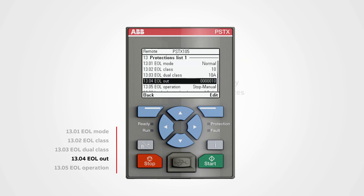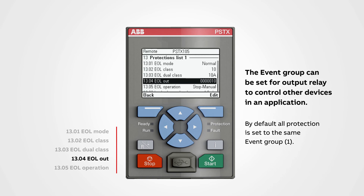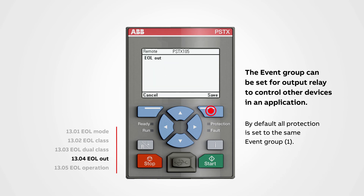EOL output: the event group can be set for an output relay to control other devices in an application. By default, all protection is set to the same event group — event group 1.